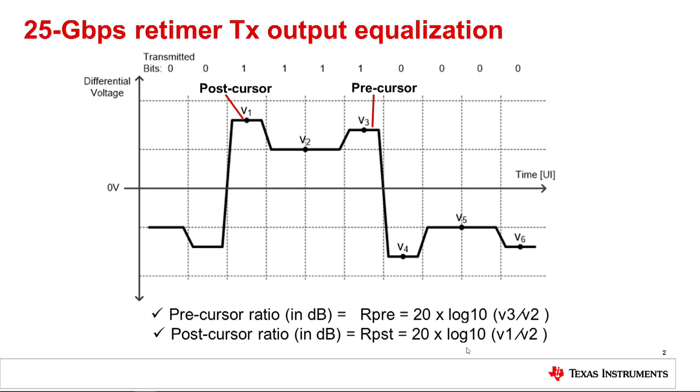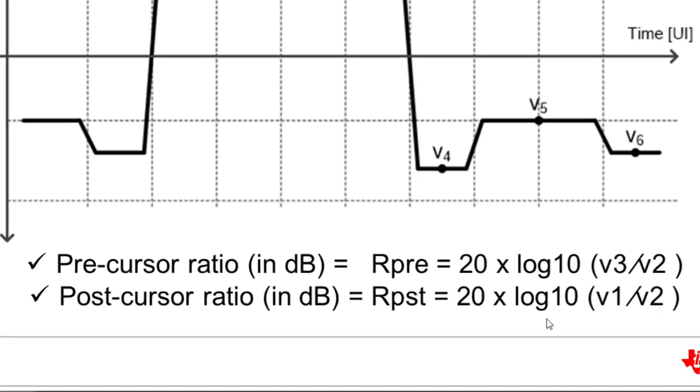The precursor and post-cursor de-emphasis functions allow the host system to pre-distort the transmitted signal. The objective is to obtain an equalized electrical signal after transmission across media suffering various signal dispersion effects. To calculate the amount of pre- and post-cursor de-emphasis in decibels, we simply take the ratio of the post-cursor or precursor voltage amplitude over the amplitude for the non-transitioning signal portion, either 20 times log V3 over V2 or 20 times log V1 over V2.